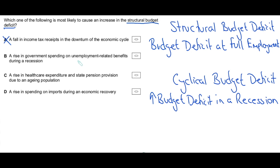A rise in government spending on unemployment benefits during a recession. Again, a rise in spending on benefits, that is going to lead to a budget deficit, a rise in the budget deficit. But during a recession, again, that's going to be a cyclical budget deficit, not an increase in the structural budget deficit. So B is wrong.